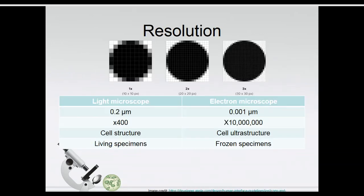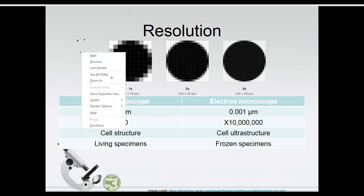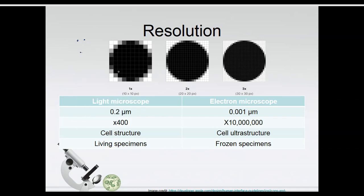One of the benefits of an electron microscope over a light microscope is resolution — the ability to differentiate between two objects that are very close to each other. We could have two objects clearly far apart, but if they're very close together it's harder to tell them apart. Resolution is calculated by looking at pixelation — how many pixels there are, how many unique pieces of the picture are being put together to give us the whole.